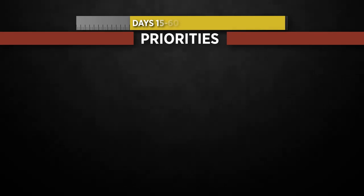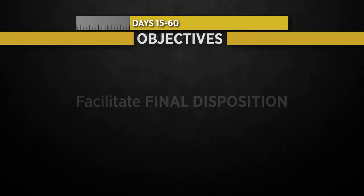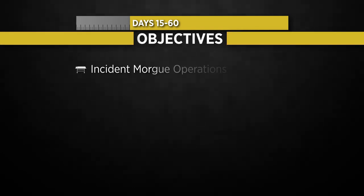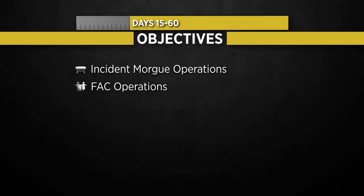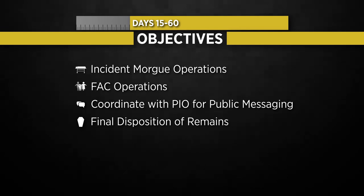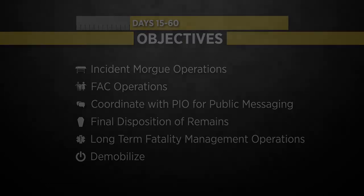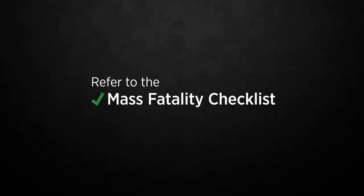During days 15 through 60, the priority is to facilitate final disposition of human remains. Primary objectives include continuing operation of the incident morgue until the majority of human remains have been processed, continuing operation of the FAC and mental health services, continuing coordination with the PIO for public messaging, continuing to facilitate the release and final disposition of human remains, planning for transition to long-term fatality management operations, and demobilizing unused resources and decontaminating sites and equipment used in response. Refer to your supervisor in the EOC for a checklist to help you establish appropriate priorities and objectives during your EOC assignment.